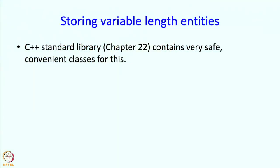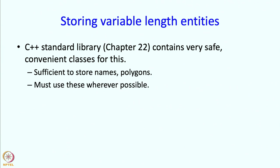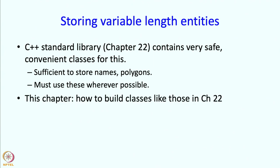The C++ standard library, which is discussed in chapter 22 of the book and which we will take up later, contains very safe and convenient classes for this. They will be sufficient to store names, polygons, and other such entities, and you should use them wherever possible. But in this lecture we are going to talk about how to build classes like those in chapter 22 — essentially understanding the mechanism behind them.